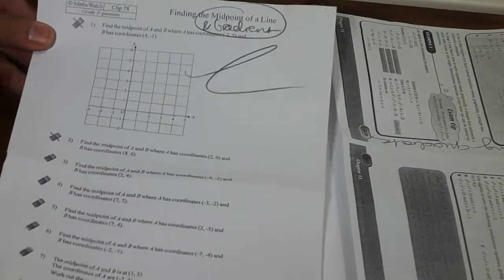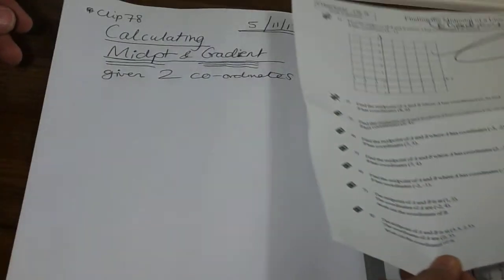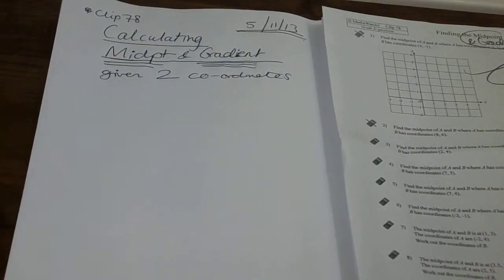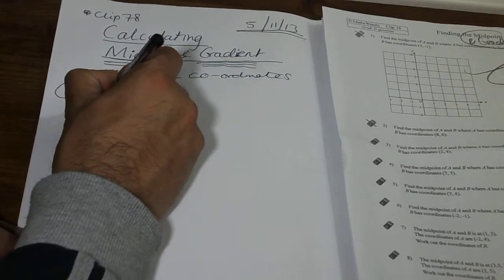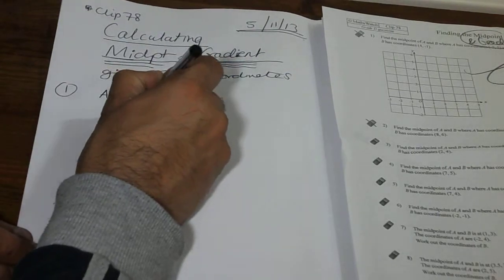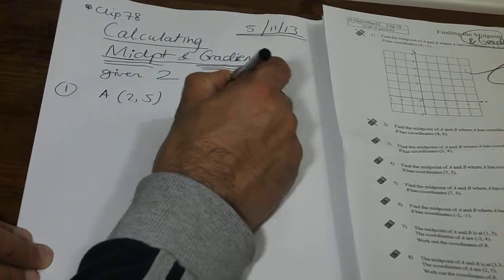So this is the original sheet that we have so we'll be looking at some of the questions from here. Let's put this to one side. So we're looking at first of all question number one. It's given us our two points A is 2, 5 and our point B is 4, minus 1.